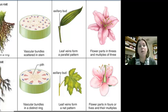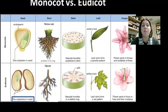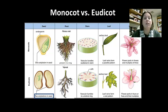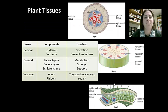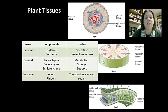Hopefully this will help with your lab where you were looking at monocot versus eudicot. Plants have three main types of tissue that can be found in roots, stems, and leaves.